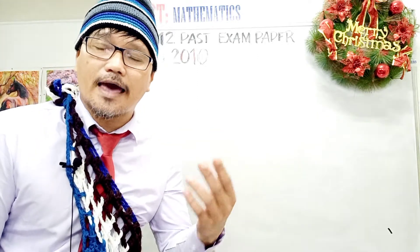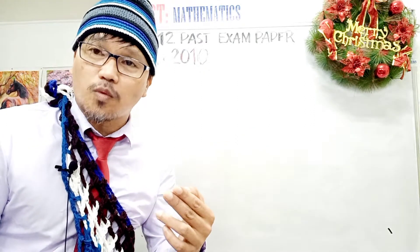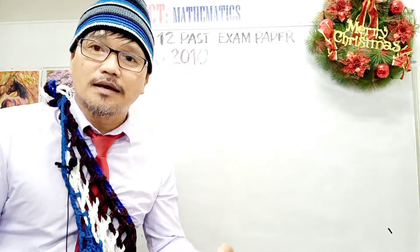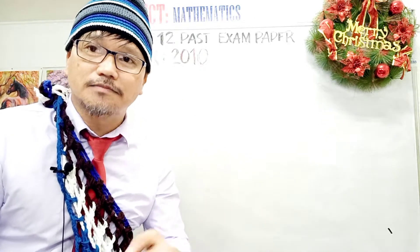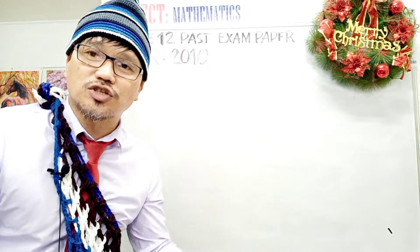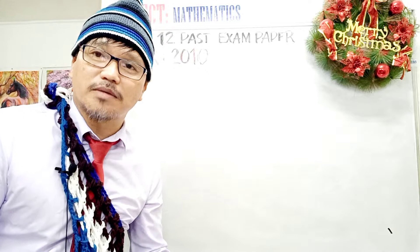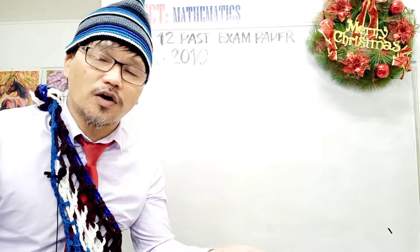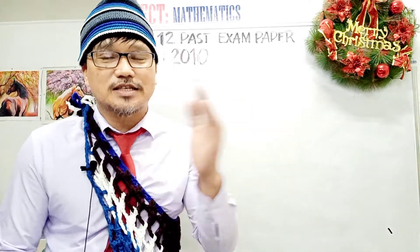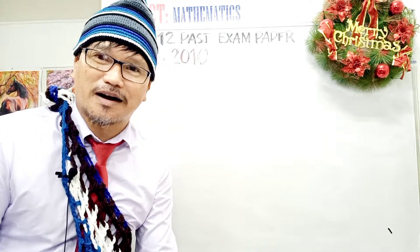Paper 1 has part A, questions 1 to 8, worth one mark each; part B, questions 9 to 17, worth two marks each; and part C, questions 18 to 25, worth three marks each. All in all, paper 1 is worth 50 marks, and paper 2 is another 50 marks, so the total is 100 marks.